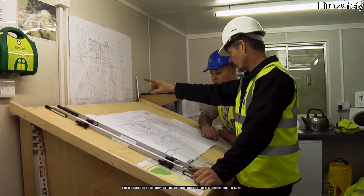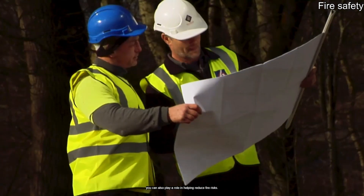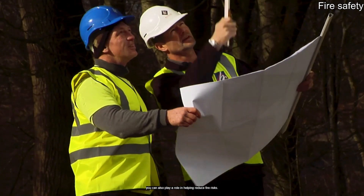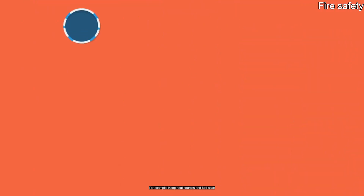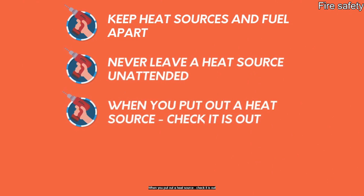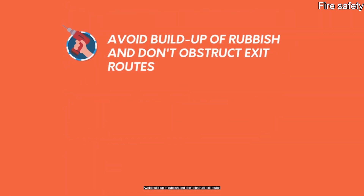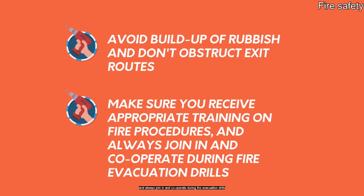While managers must carry out suitable and sufficient fire risk assessments (FRAs), you can also play a role in helping reduce fire risks. For example: keep heat sources and fuel apart; never leave a heat source unattended; when you put out a heat source, check it is out; make sure portable electrical appliances are in good working order and can't be knocked over; avoid build-up of rubbish and don't obstruct exit routes; make sure you receive appropriate training on fire procedures and always cooperate during fire evacuation drills.